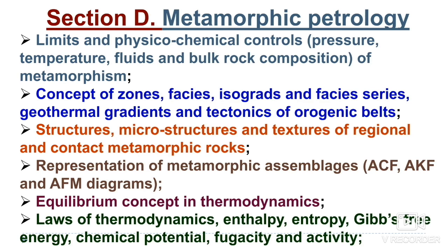Section D is metamorphic petrology. The limits and physico-chemical controls include pressure, temperature, fluid, and bulk composition of metamorphism. The concept of zones, facies, isogrades, facies series, geothermal gradient, and tectonics of orogenic belts is very important — you will surely get a question on metamorphic facies either in short note or compulsory type. Structures, microstructures, and textures of regional and contact metamorphism are also important.